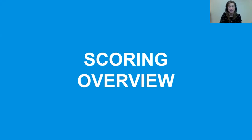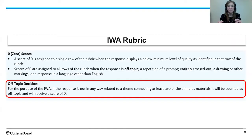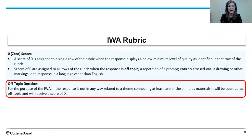Now let's talk about how you're going to be scored. Before we get too far into the actual rubric rows, you will notice a note at the top of the rubric for the IWA about scores of zero. Scores of zero are assigned to all rows of the rubric when the response is off topic. For the purposes of the IWA, an off-topic decision means the response is not in any way related to a theme connecting at least two of the stimulus materials. It will be counted as off topic and receive a score of zero — not just one row, the whole IWA.